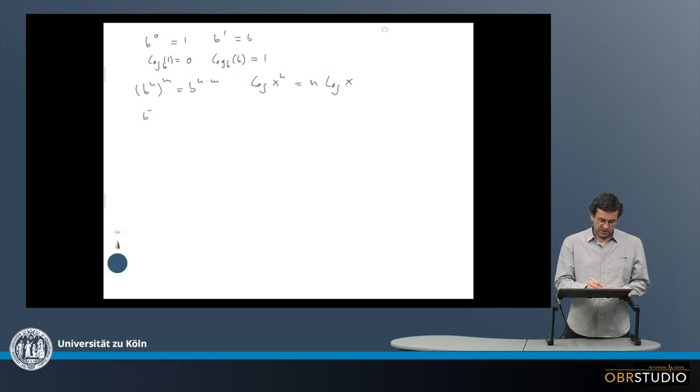Another one: b to the power of minus n equals 1 divided by b to the power of n. For logarithms, it's similar to the previous one. Log of x to the power of minus n is of course minus n times the logarithm of x.